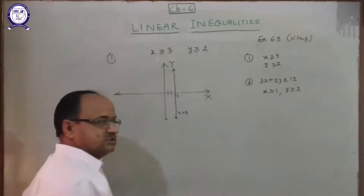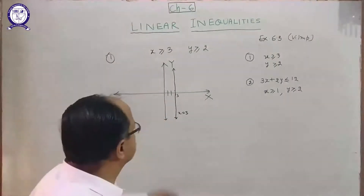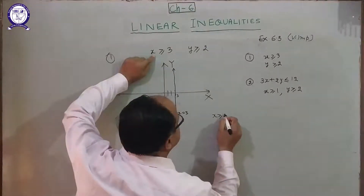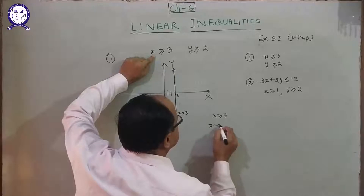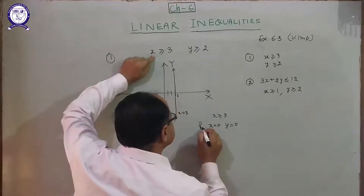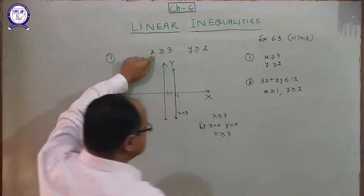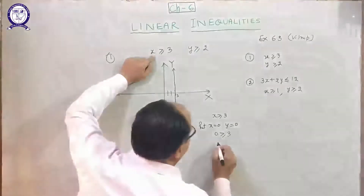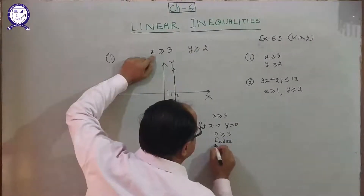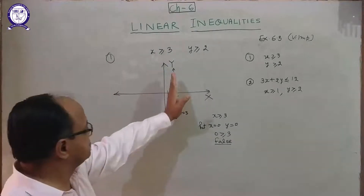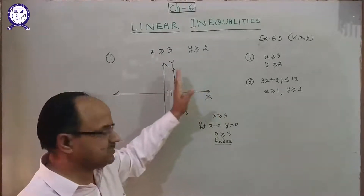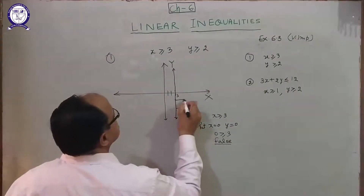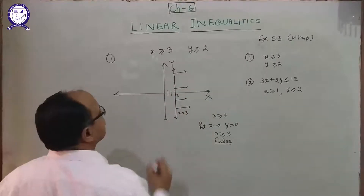Now, which portion is the solution — which is the shaded region? Put x equal to 0 and y equal to 0 in x greater than or equal to 3. That gives 0 greater than or equal to 3, which is false. Therefore the shaded region is away from the origin — not towards the origin, away from the origin. It means this portion here.